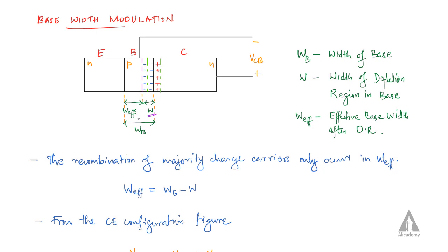WB is the total width of the base, and W is the width of the depletion region inside the base. W_effective is the effective base width remaining after accounting for the depletion region under reverse biasing.